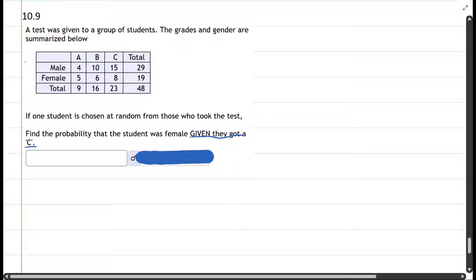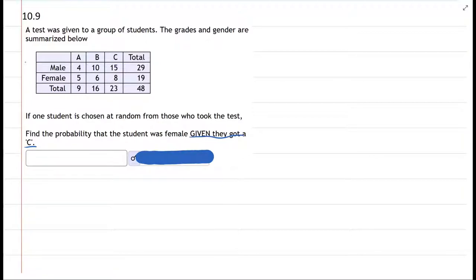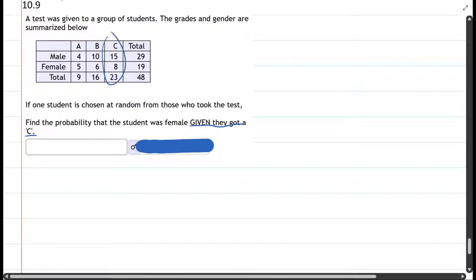We're only going to look at the C students, so I'm going to cross out lots of columns. In fact, every column that's not the C column I want to ignore, and I'm crossing them out. I don't want to look at them and get confused by any of their numbers.